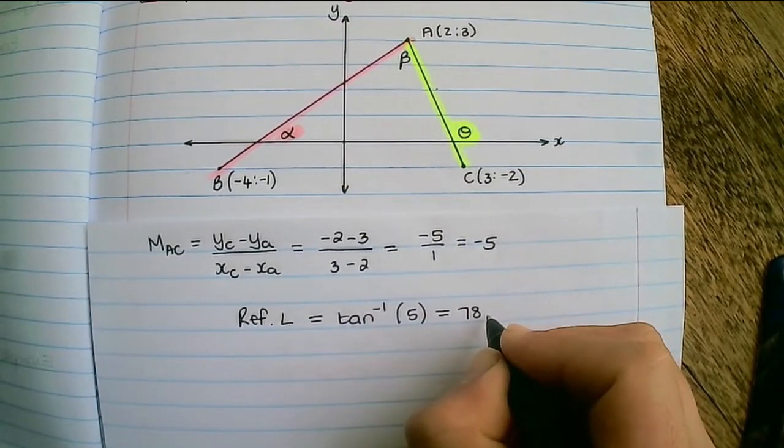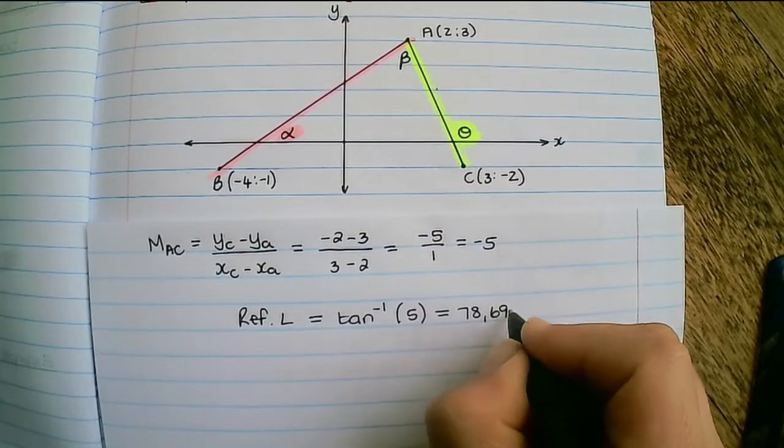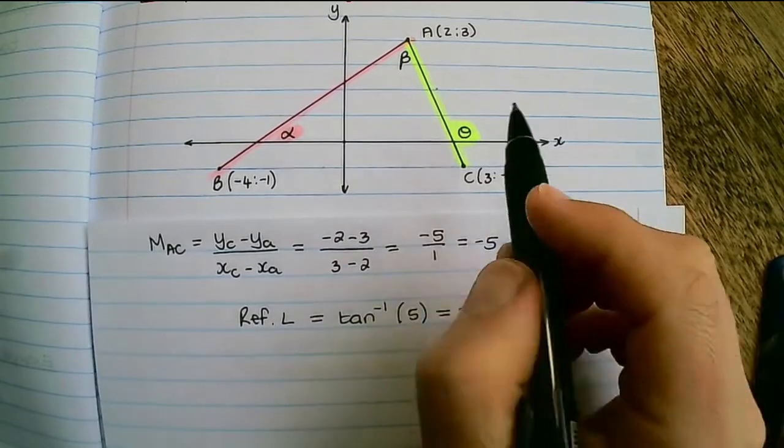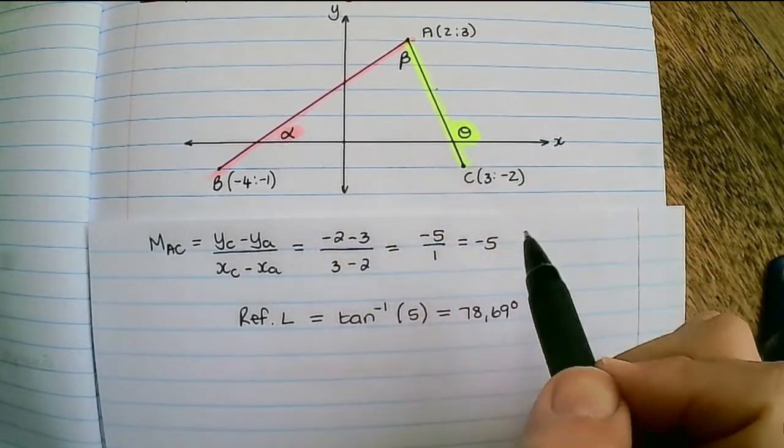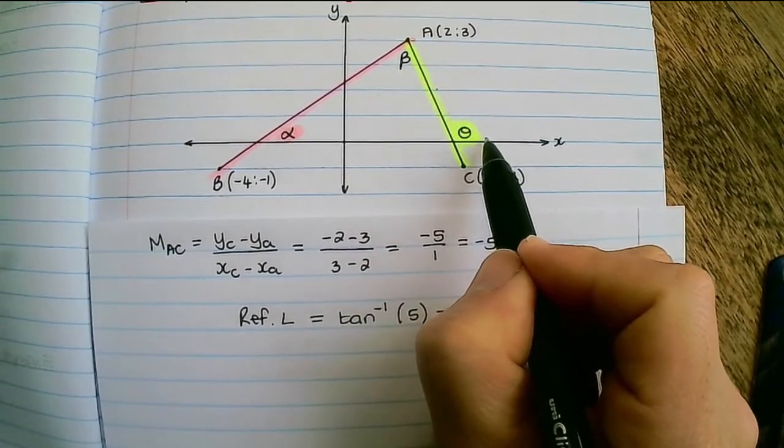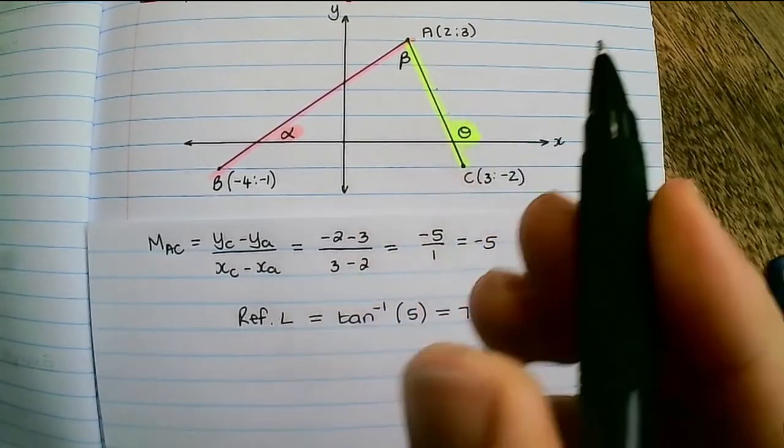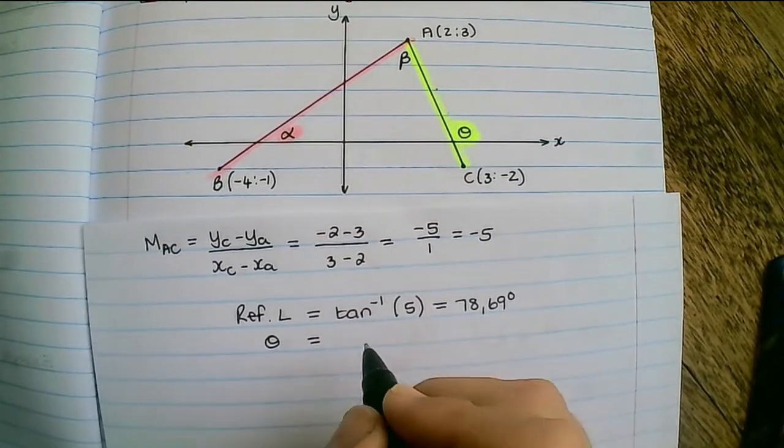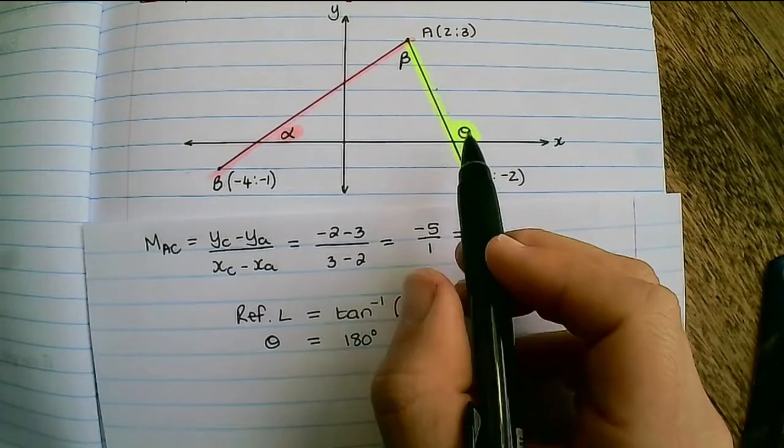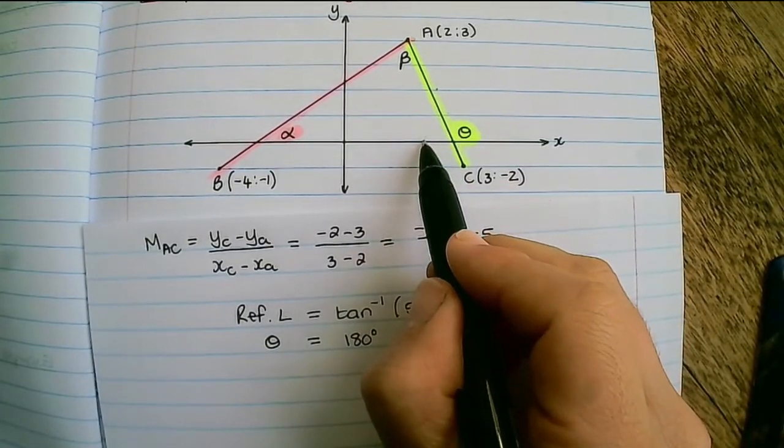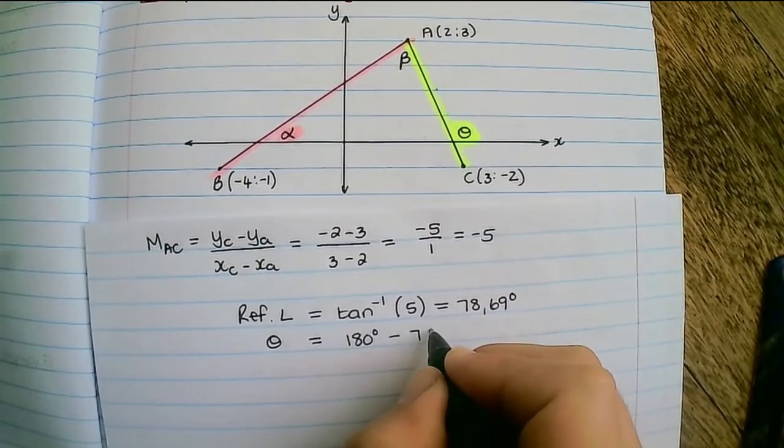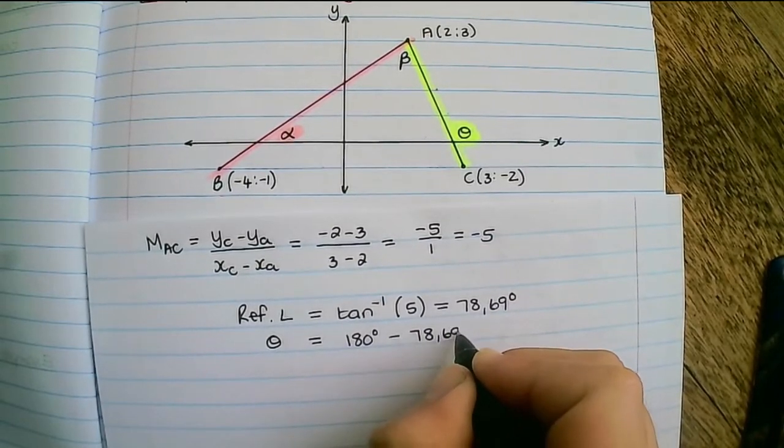Which would be 78.69 degrees. Now this angle is obviously bigger than 78.69 degrees because you can see it's an obtuse angle. Therefore theta would be equal to 180 degrees, which is now a full straight line, and then we subtract the reference angle of 78.69 degrees.